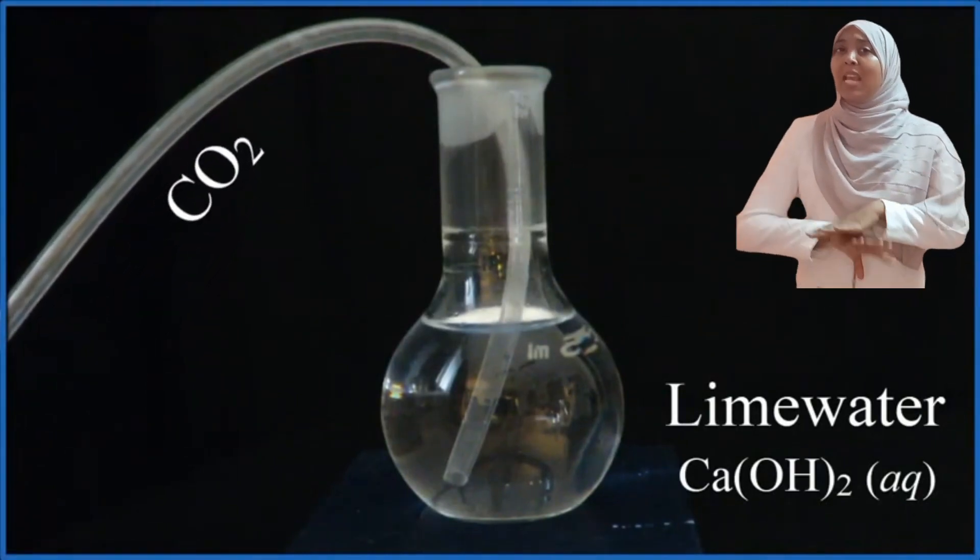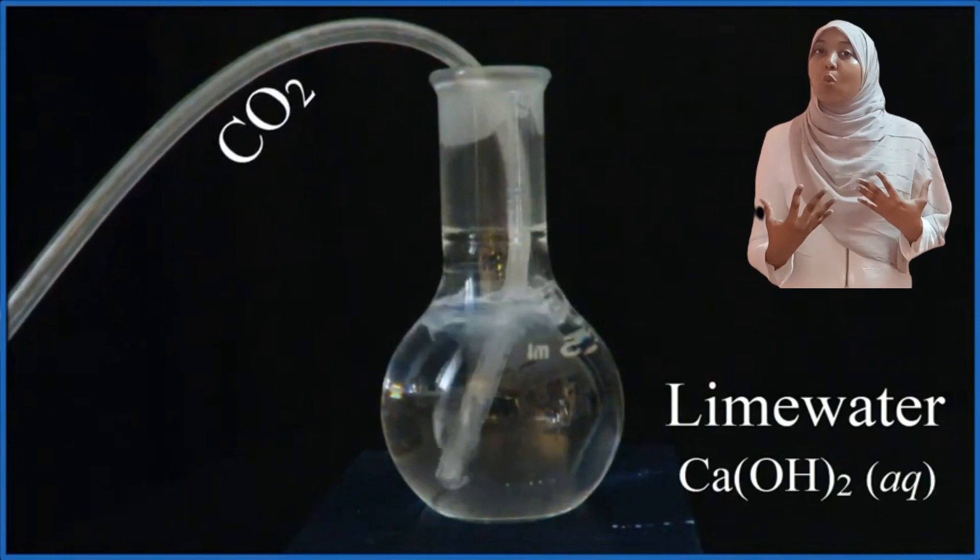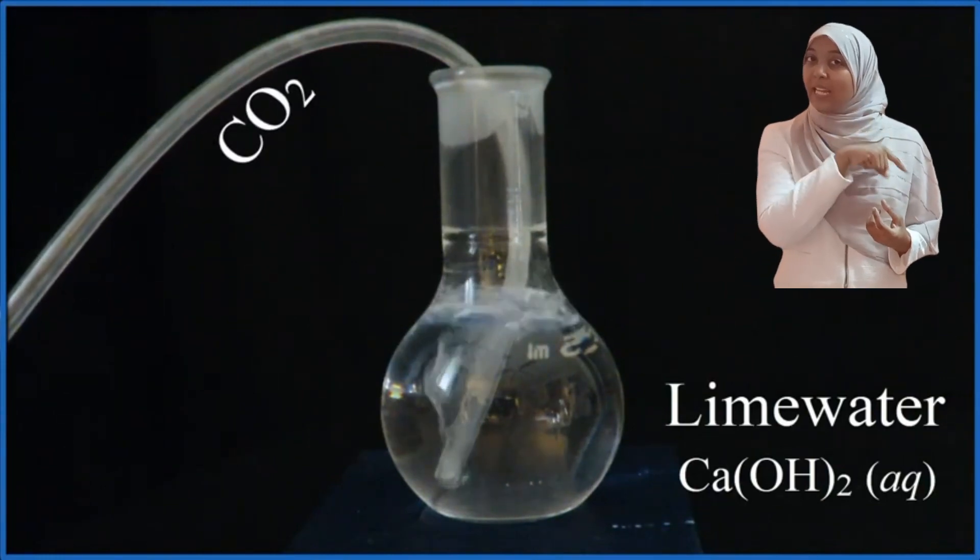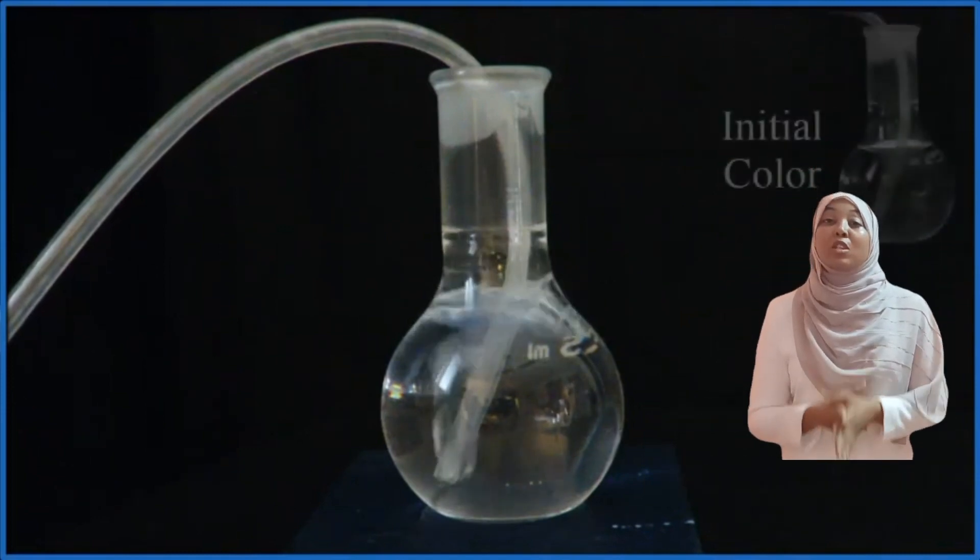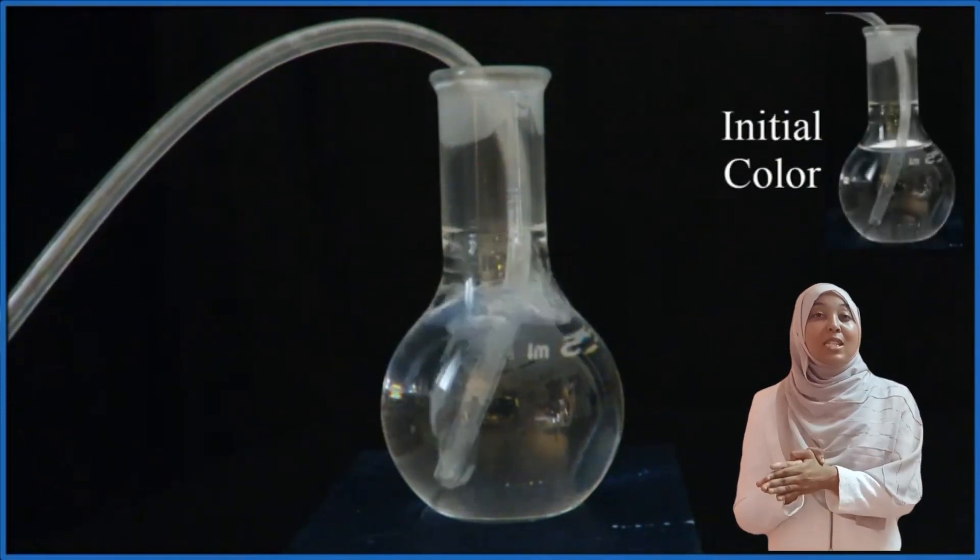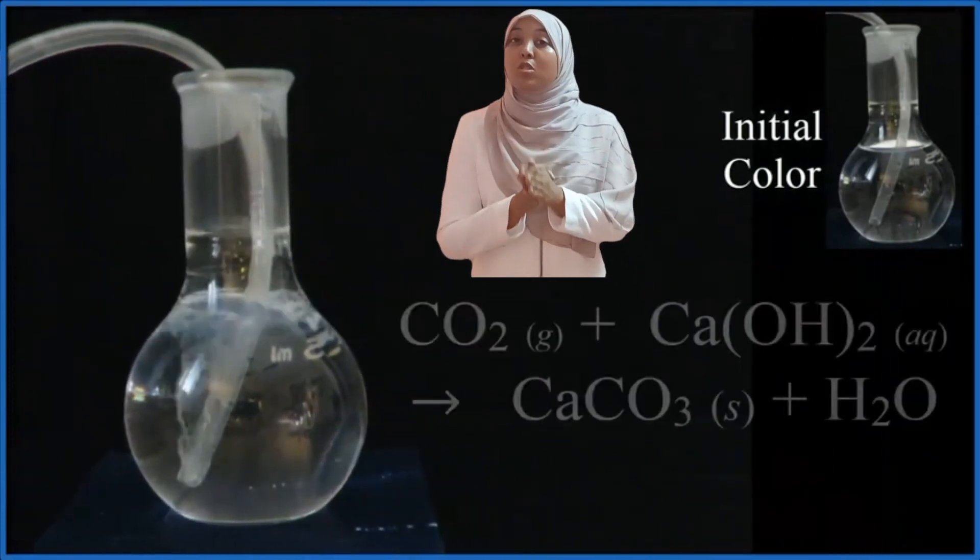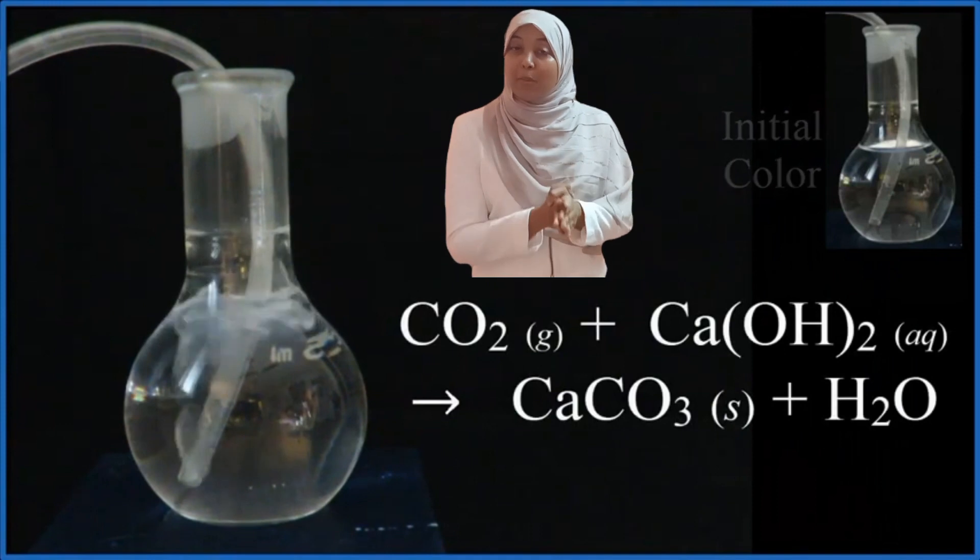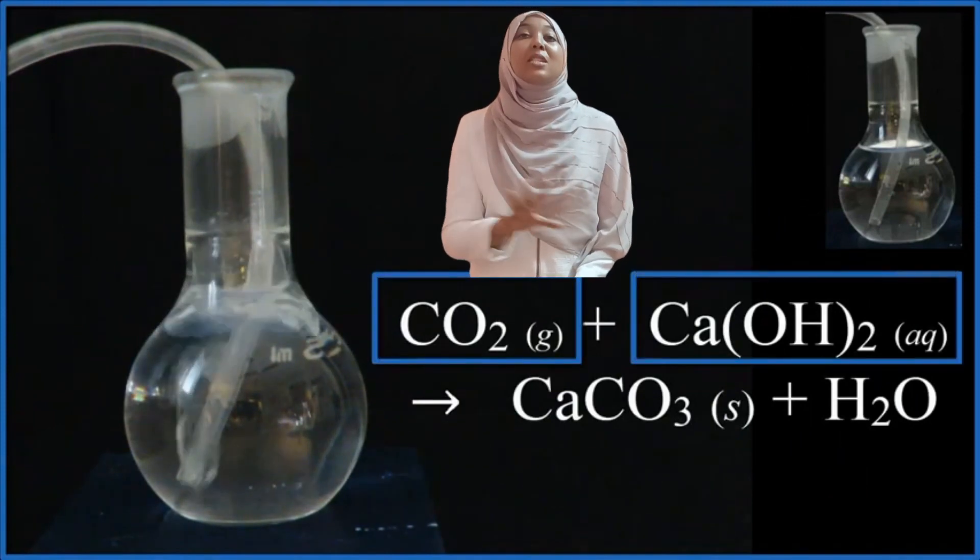Now, limewater is a colorless liquid—it's clear—but when you bubble carbon dioxide into it, it forms a white precipitate. The reason for this is because carbon dioxide reacts with calcium hydroxide to form an insoluble solid, and that is calcium carbonate. So the precipitate you're seeing is because calcium carbonate is insoluble in water and therefore forms a white precipitate.